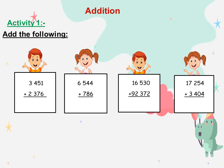The first: ones with ones. 1 plus 6 equals 7. Tens with tens: 5 plus 7 equals 12, so we will write 2 and carry up 1. 1 plus 4 equals 5. 5 plus 3 equals 8. And thousands with thousands: 3 plus 2 equals 5. Excellent, that's so easy.